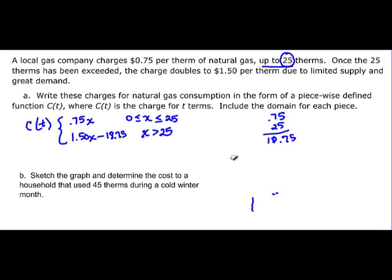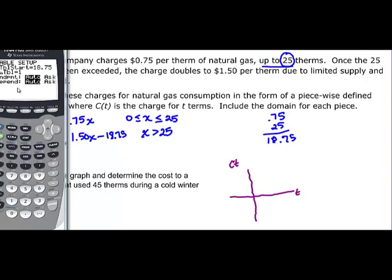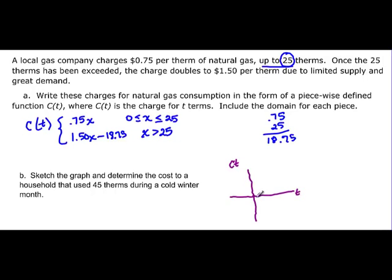So they want us to graph this. I'm just going to do a real rough sketch here. So I've got my C(t) and I've got my t. And I'm going to go to my calculator. So I have those two equations in here. And I know that at 25, they actually should have the same value. Let's do this first part then. From 0.75 times 0 would be 0.